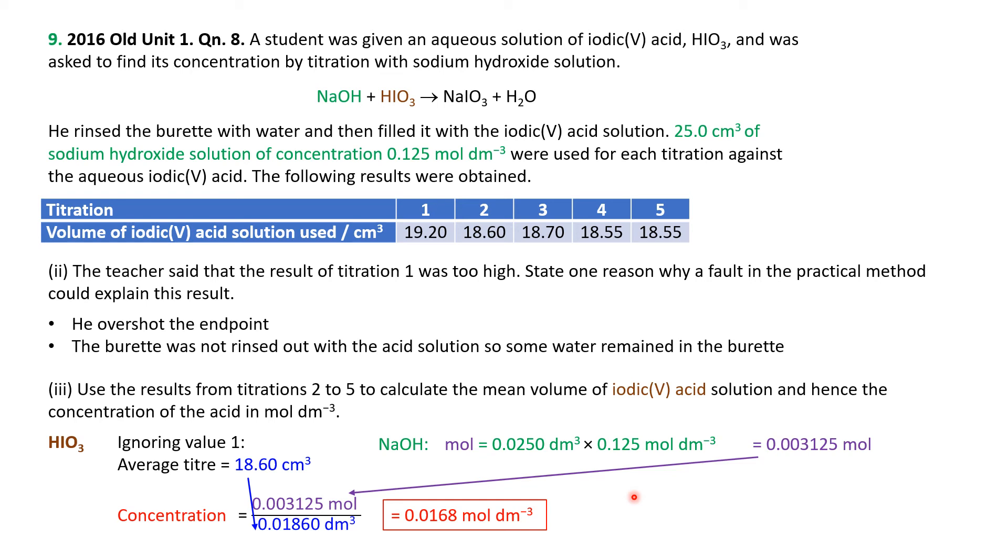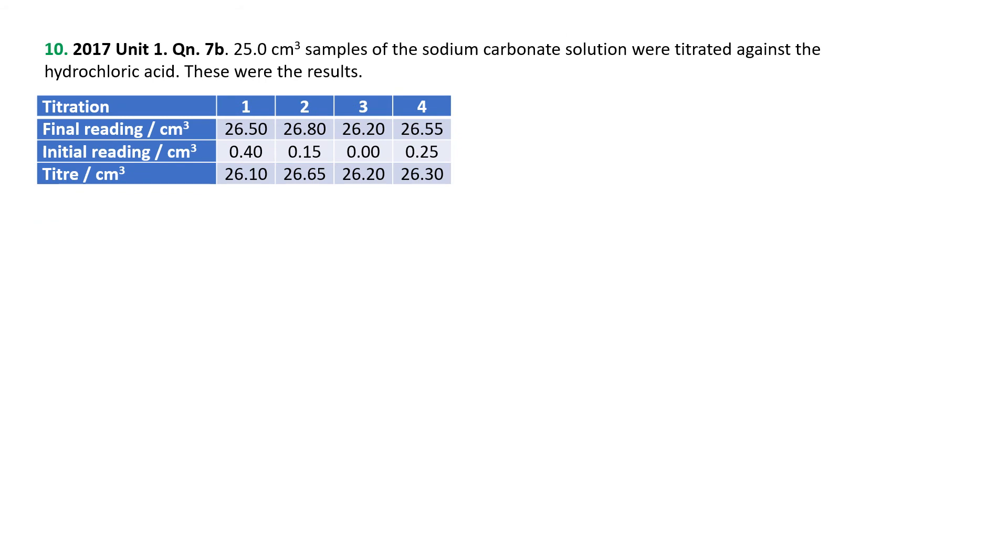Now we're taking some 25 cubic centimeter samples of sodium carbonate titrated against hydrochloric acid. Here are the results. So the first thing is, what's the mean titer that should be used to determine the concentration of the hydrochloric acid? We've got 26.1, 26.2, 26.3, and 26.65. Thus, you would probably want to leave this one out, it's a little bit further away, the average of the remaining 3, 26.20.